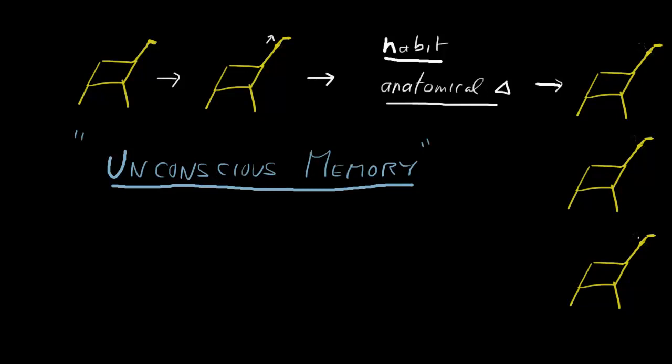But a lot of things you do are unconscious. For example, your heart is now beating and your guts are now contracting. All sorts of things are going on at an unconscious level. And Butler supposed that the habits would eventually become unconscious and then be passed on in the germline.